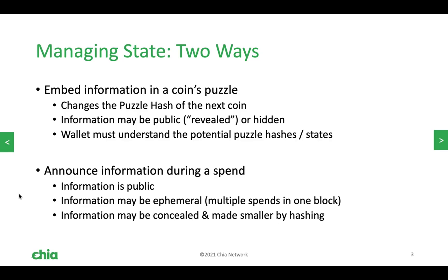You can do this in two ways on the Chia blockchain. You can embed state into the coin's puzzle — that's a program attached to the coin that can't be changed without destroying the coin. Another way is by sharing information between coins, and that's done with something called announcements. Coins can only interact with each other through spends in the same block, so you can't use this trick across blocks.